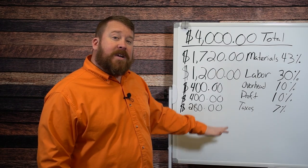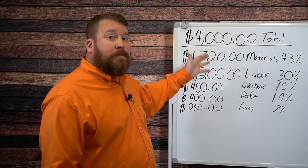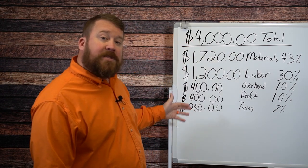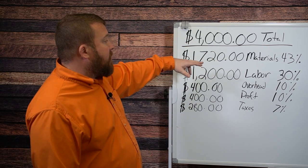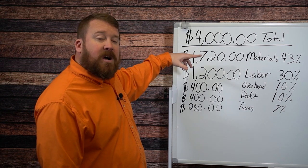Next to each of the five buckets, you see a percentage. That's the percentage of the total revenue that each bucket represents. So, the materials represent 43% of the cost of building a fence.